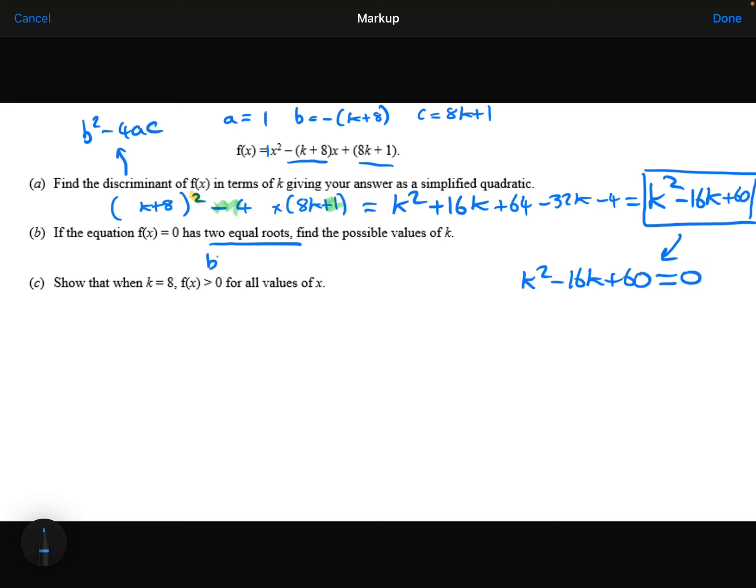Equal roots means the same thing as repeated roots, so your discriminant equals 0. Which I can now factorize and solve. It's going to be (k-10)(k-6) to get the 60 and the minus 16. So k is either 10 or 6.